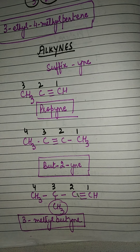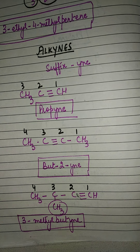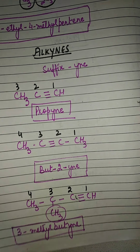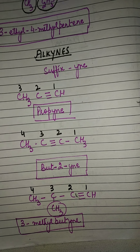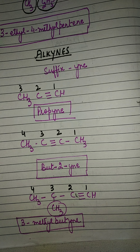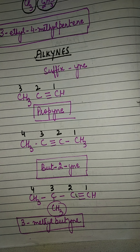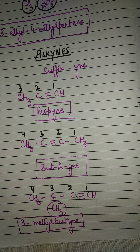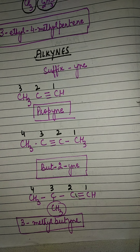This finishes the nomenclature of all three types of hydrocarbons: alkanes, alkenes, and alkynes. Some examples are given in your book, so practice those examples and try to write their names.